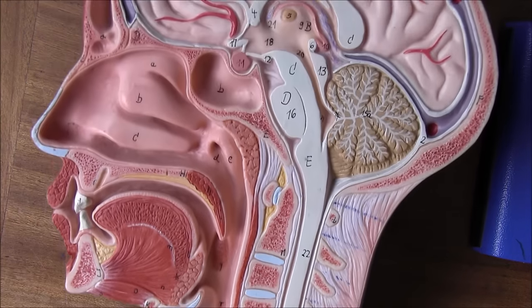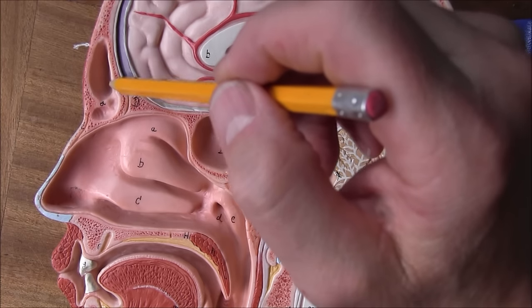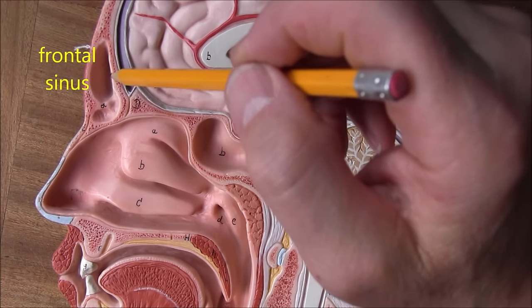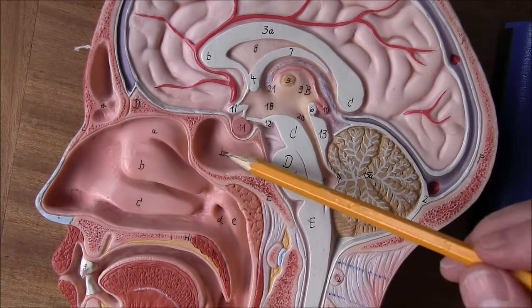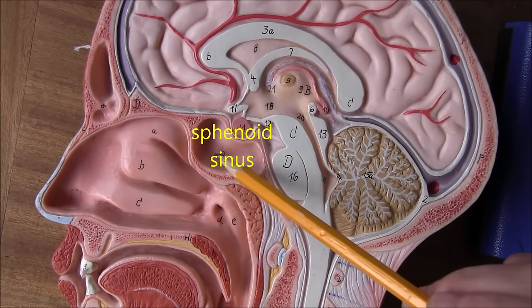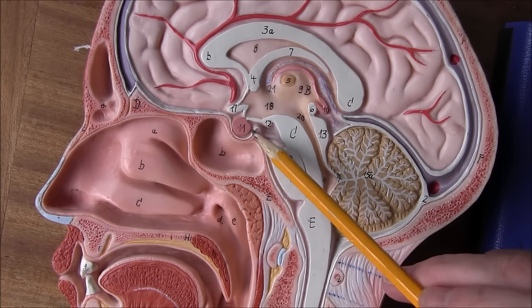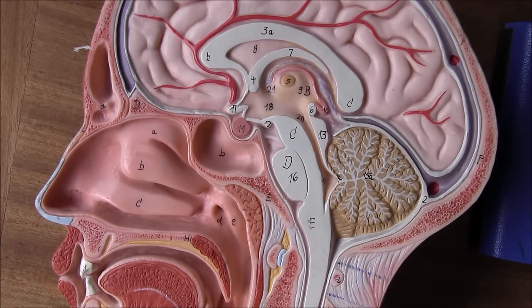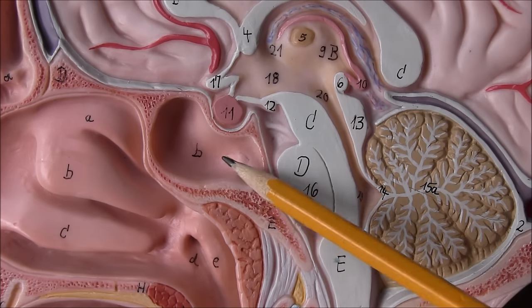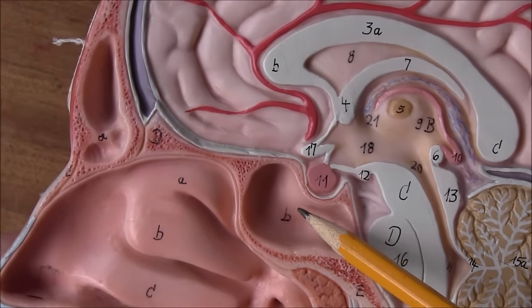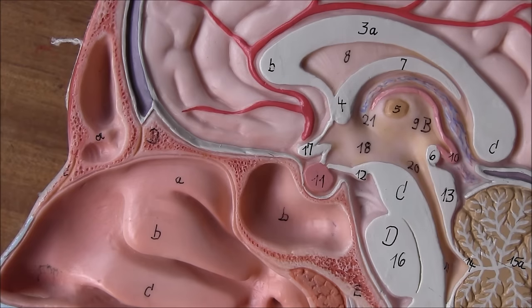Going back up, we notice gaps in the skull — these are sinuses, which are air-filled spaces within the skull. This one is the frontal sinus, and the one at the back is the sphenoid sinus, associated with the sphenoid bone at the base of the skull. Just above the sphenoid sinus is the pituitary fossa containing the pituitary gland. Both sinuses produce mucus that drains into the nasal cavity, and if they become inflamed it is called sinusitis.